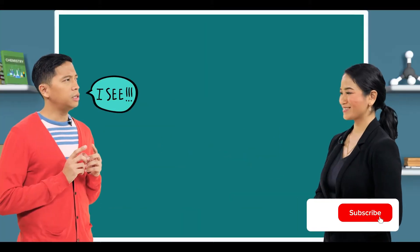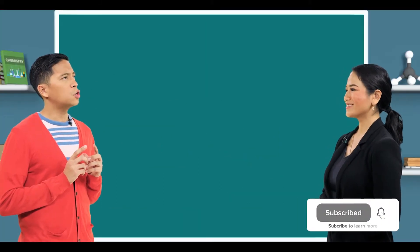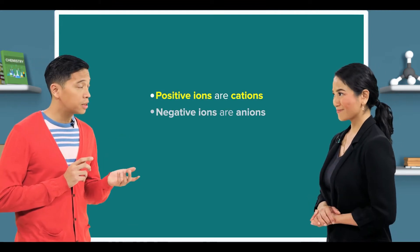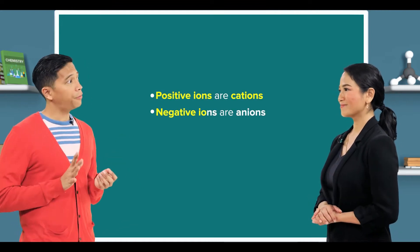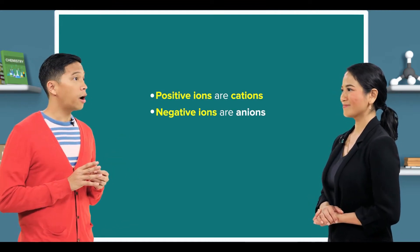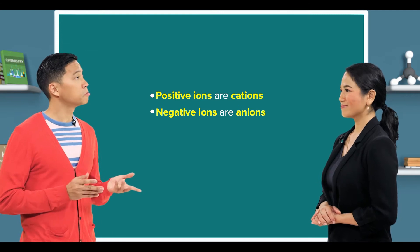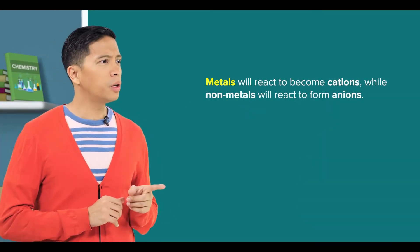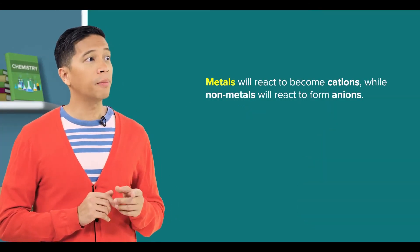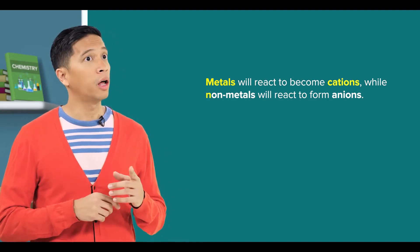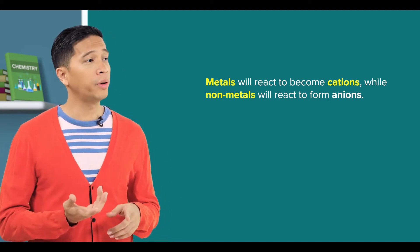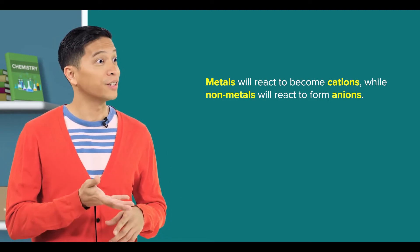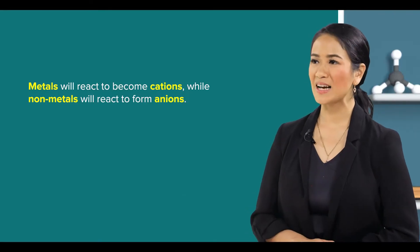I see. So positive ions are cations and negative ions are anions. Got it. So metals will react to become cations, while non-metals will react to form anions — correct? That's correct.